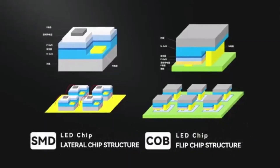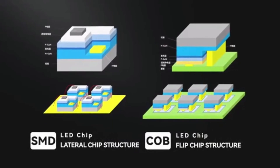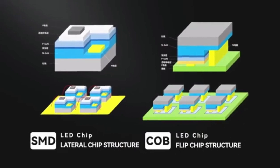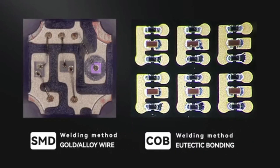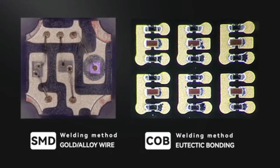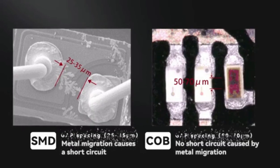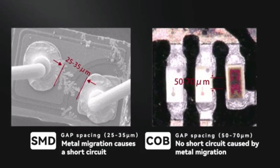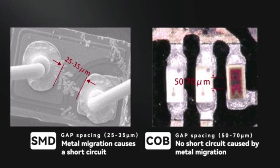SMD displays provide a lateral chip structure, whereas COB displays provide a flip chip structure. The welding method in SMD displays is the gold or alloy wire method, whereas COB displays use eutectic bonding. Gap spacing in SMD displays is typically 25 to 35 micrometers, while in COB it is 50 to 70 micrometers. COB displays are also not prone to short circuits caused by metal migration.